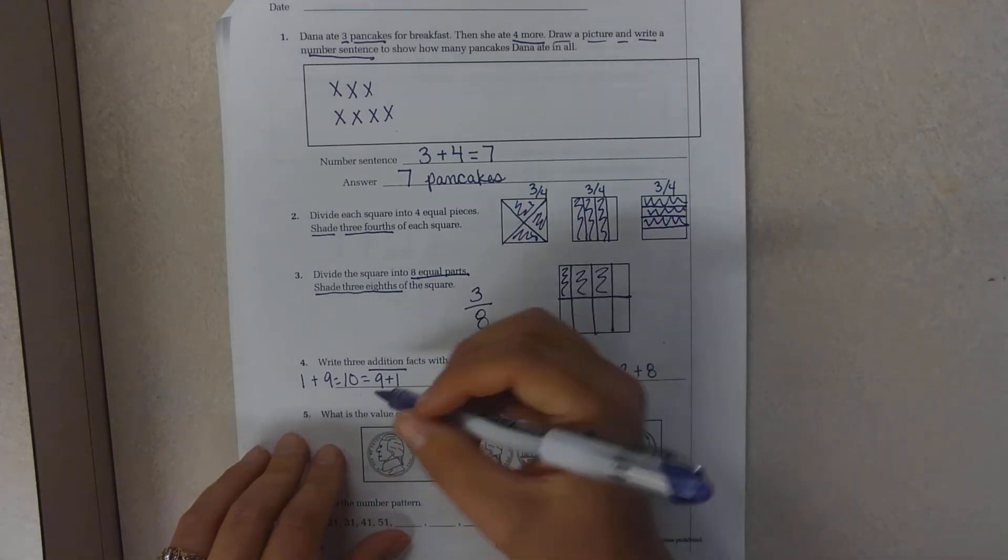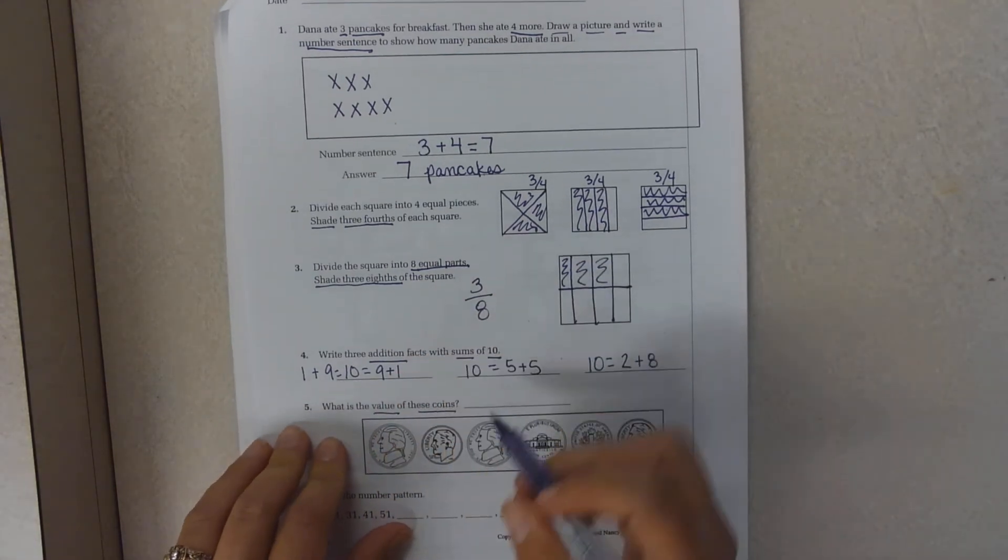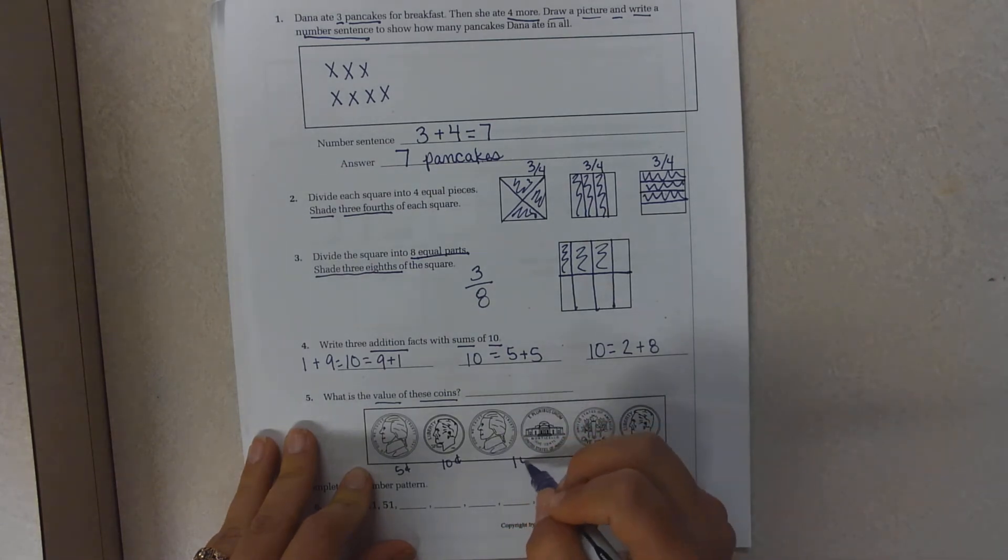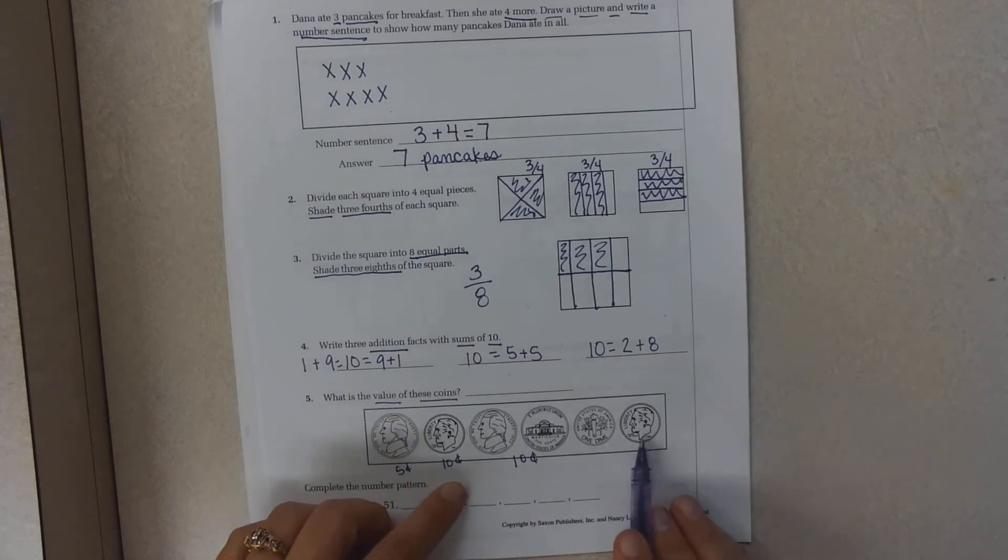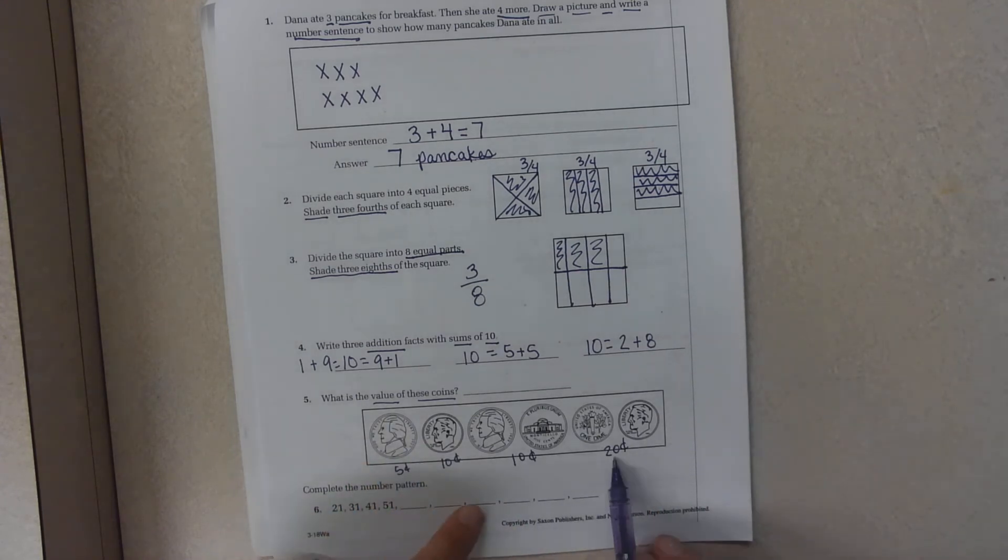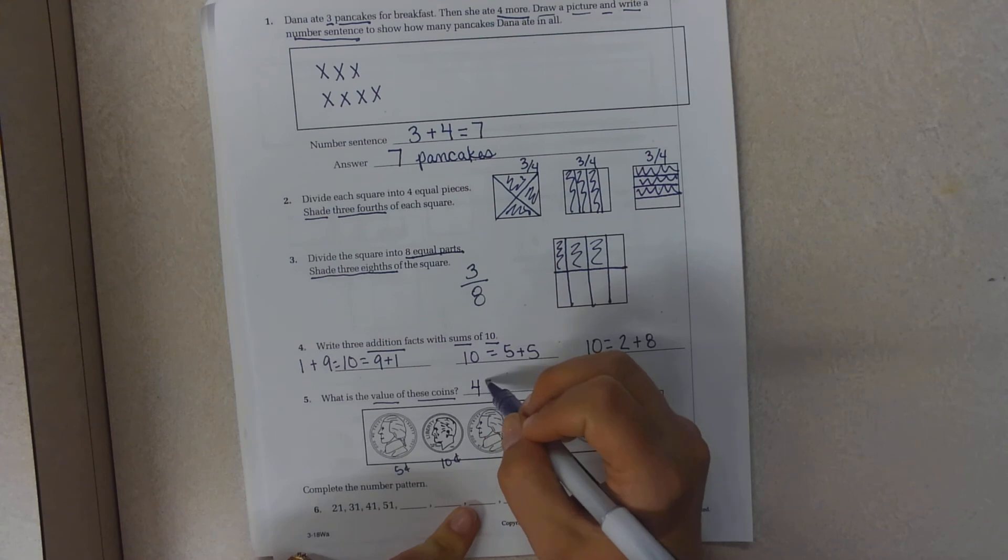What is the value of these coins? Well, a nickel is worth five cents. A dime is worth 10 cents. A nickel is worth five. There's two of them together. So that would be 10 cents. Two dimes is worth 10, 20 cents. And then I can just add those up. 20, 30, 45. 45 cents.